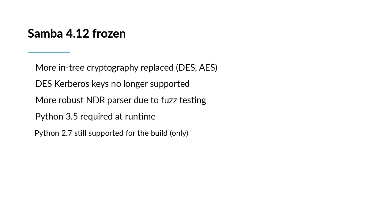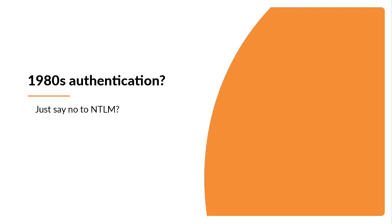Samba 4.12 is frozen — froze a few weeks ago, or sorry, freezes in a week or so — and we'll have more removal of legacy cryptography. We're getting rid of DES because, you know, also 1980s authentication. I've been doing some fuzz testing work that's in there and we've bumped up our versions. So that's the very quick overview of what we've done, and a bit more on the authentication side of things.